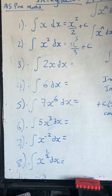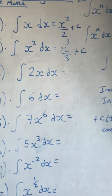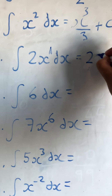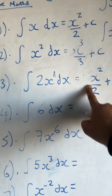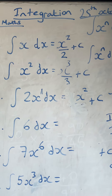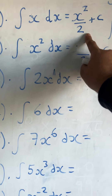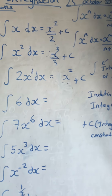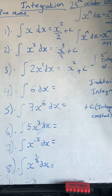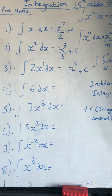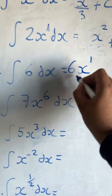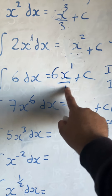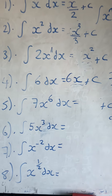Question 3: the integral of 2x dx — think of it as 2x to the power of 1. Adding 1 to the power gives 2x squared over 2 plus c. The 2's cancel, so the answer is x squared plus c. Question 4: the integral of 6 dx — treat it as 6x to the power of 0, since x to the 0 is 1. This gives 6x to the 1 over 1 plus c, which simplifies to 6x plus c.